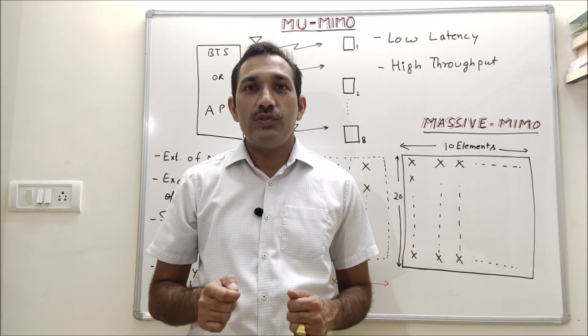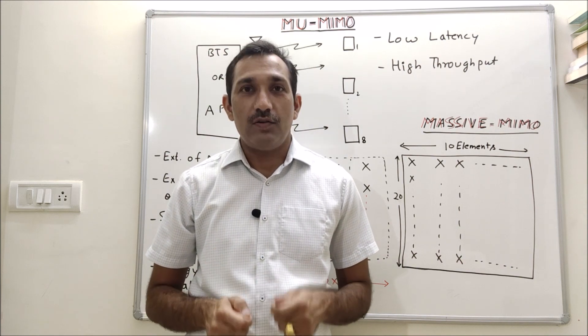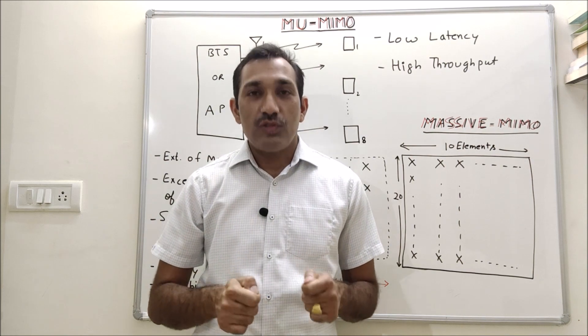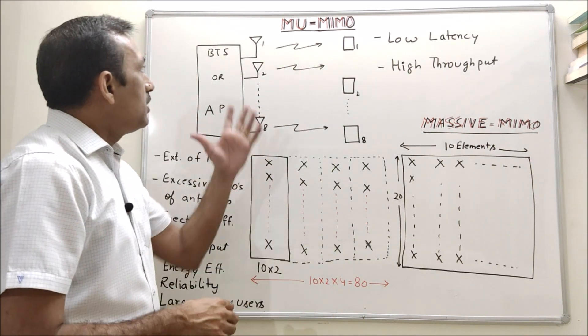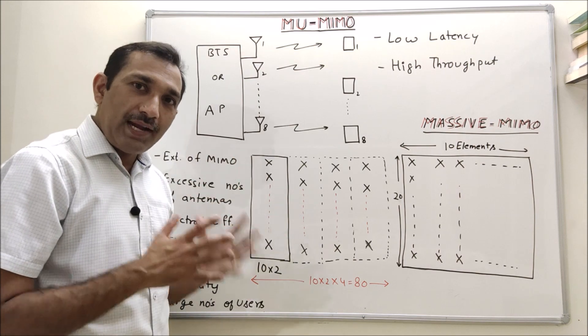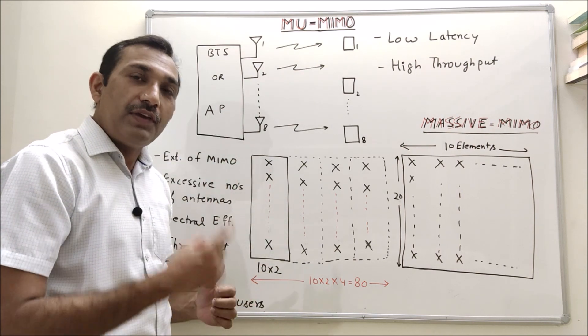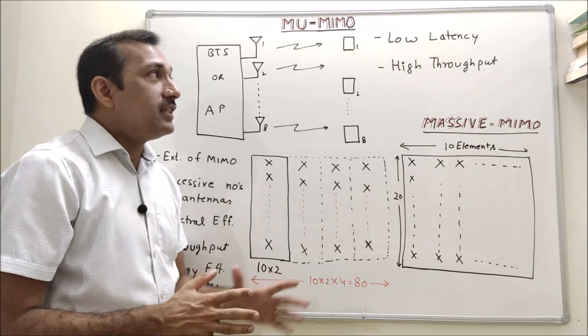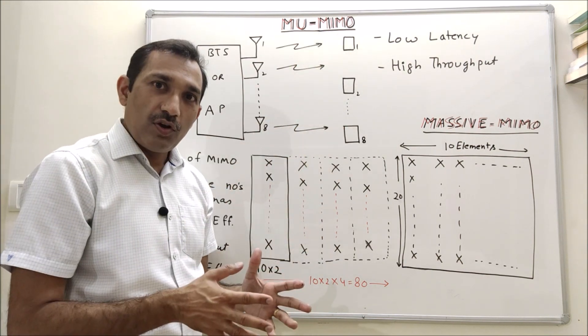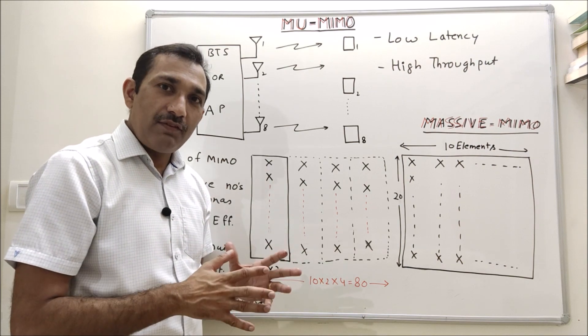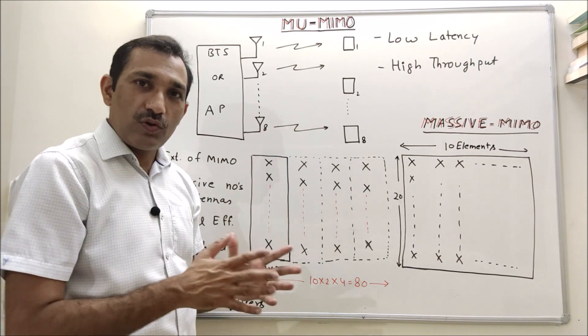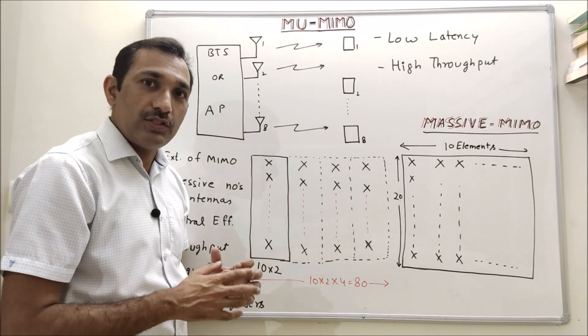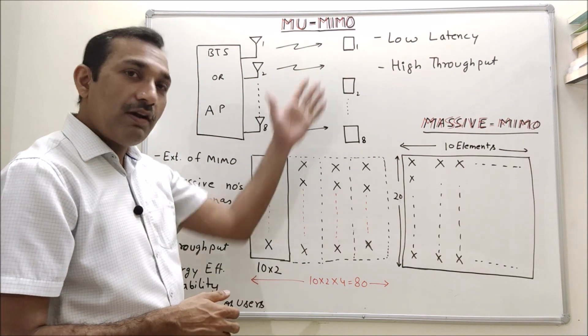Now let's talk about MU-MIMO, that is multi-user multi-input multi-output technology. As name suggests it is a multi-user technology. If we have multiple antennas at the transmitter and we have only one device at receiving end, then this technology is not effective or it will give same benefit as normal MIMO. This is an extension of MIMO technology and this gives advantage when we have multiple users.